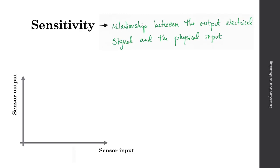Let's begin with sensitivity. Sensitivity describes the relationship between the output signal, which is typically electrical, and the physical input. The sensitivity is often described as a ratio of the change in output relative to the change in input. So you might see something like ohms per lux or volts per meter per second squared. This would be typical of an accelerometer.